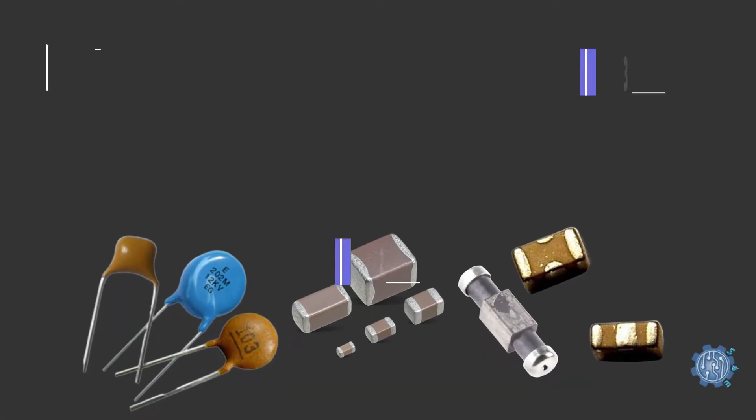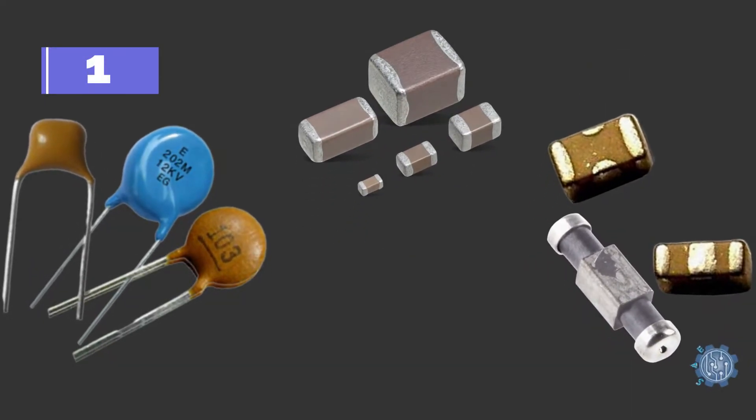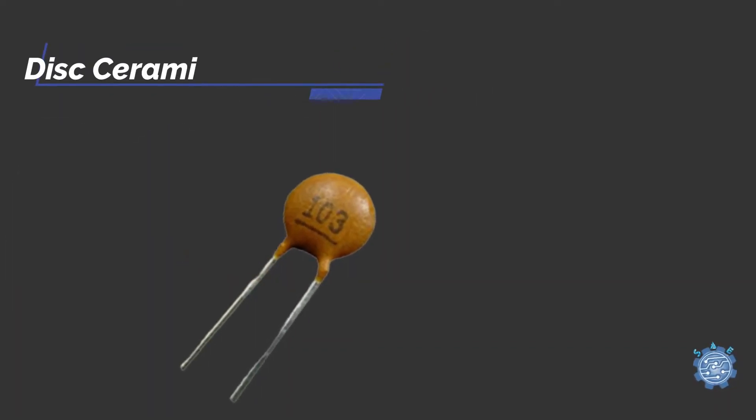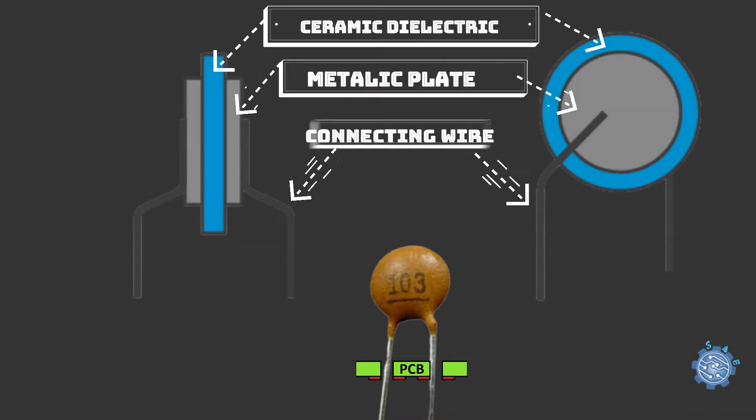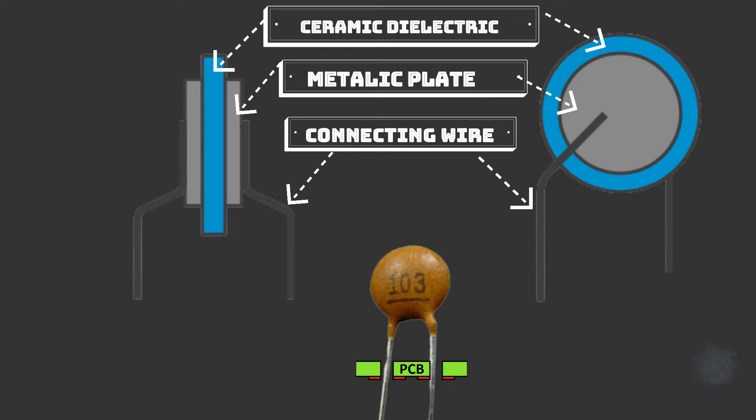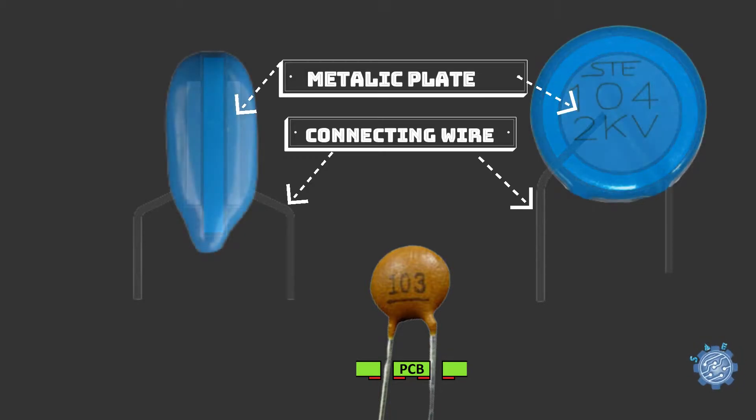Disc capacitors can be split in three. Disc ceramic capacitor is a through-hole capacitor and is made from a ceramic disc and two contacts on both sides, and these are coated with a resin.